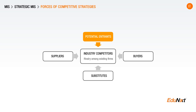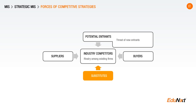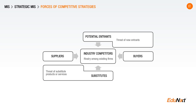Next, you have potential entrants — new companies that may enter providing the same or similar kinds of products and services. Then you have substitutes: products and services that are not the same but could provide a similar kind of function. In the soft drink market, for example, Coca-Cola and Pepsi are similar, but a mango juice or other fruit juice is not the same as a cola — it's a substitute product. So you have incumbent competitors, new entrants, and substitutes.